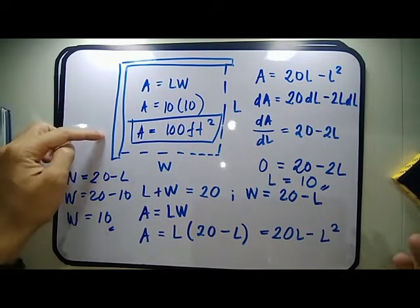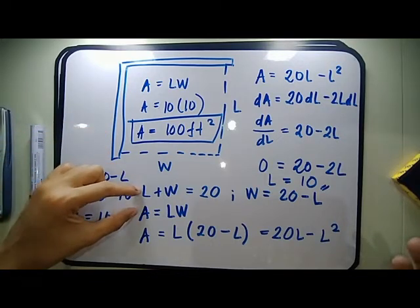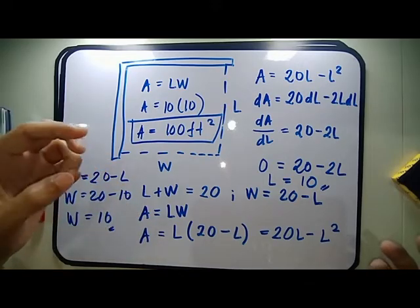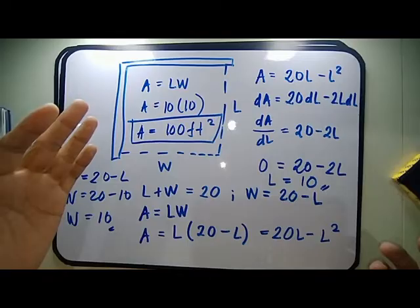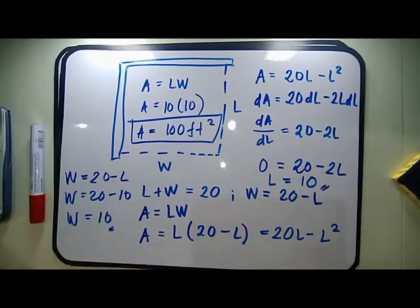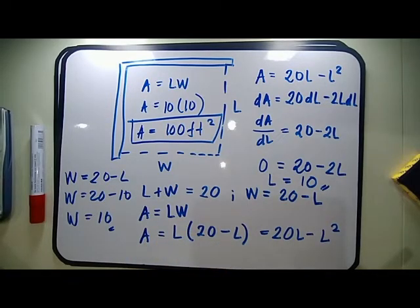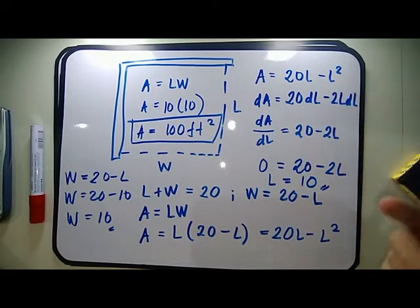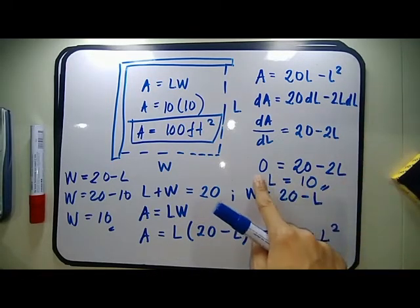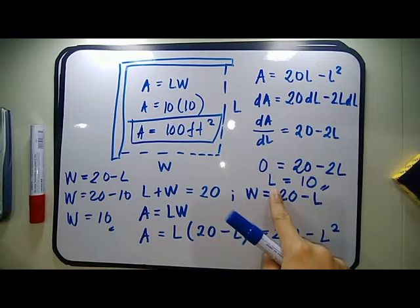To recap the steps: first, illustrate the figure. Second, make an equation using the conditions in the problem. Third, reduce your equation to two variables — one variable on the left side and one on the right. Remember, if you are maximizing a certain variable, do not remove it from your equation. Then find the derivative, equate to zero to maximize, find the critical points, and go back to your original equations.